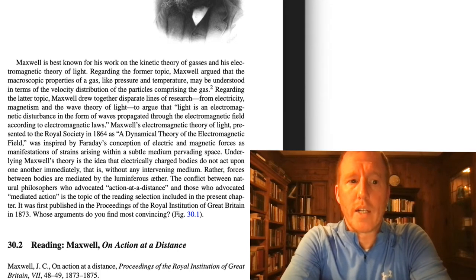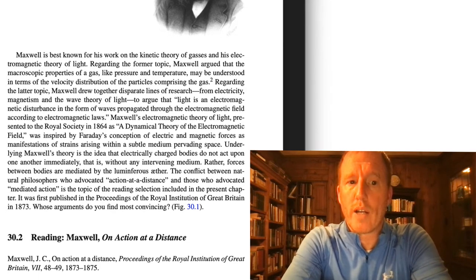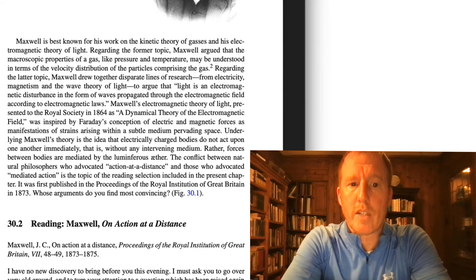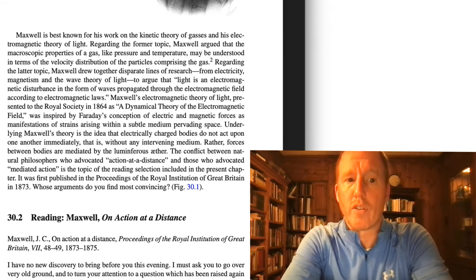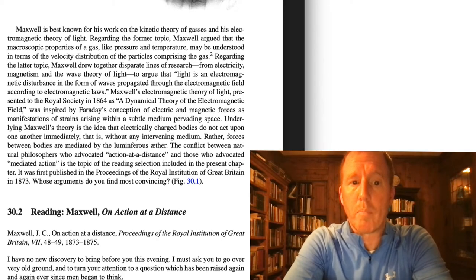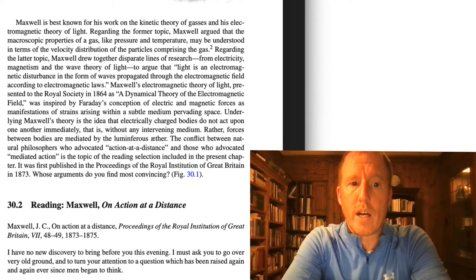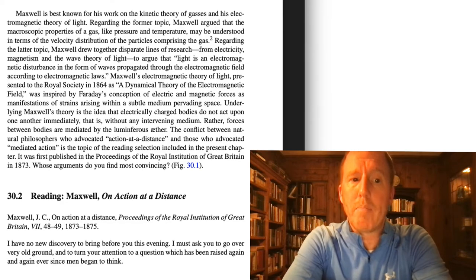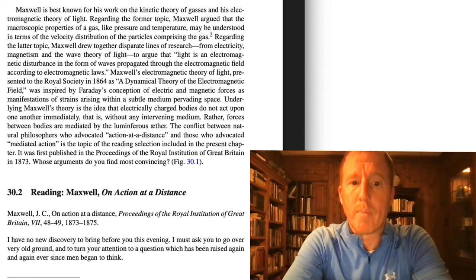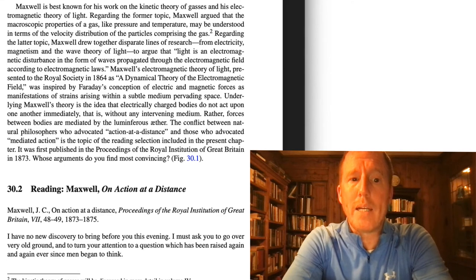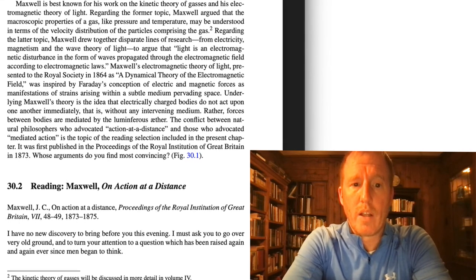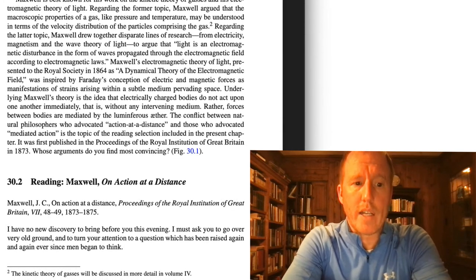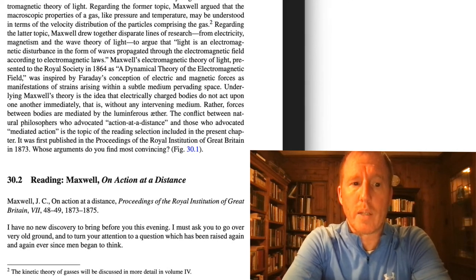Maxwell's electromagnetic theory of light, presented to the Royal Society in 1864 as "a dynamical theory of electromagnetic field," was inspired by Faraday's conception of electric and magnetic forces as manifestations of strains arising within a subtle medium pervading space. Underlying Maxwell's theory is the idea that electrically charged bodies do not act upon one another immediately without any intervening medium. Rather, forces between bodies are mediated by the luminiferous ether. The conflict between natural philosophers who advocated action at a distance and those who advocated mediated action is the topic of the reading selection, first published in the Proceedings of the Royal Institution of Great Britain in 1873.